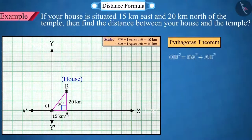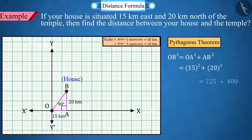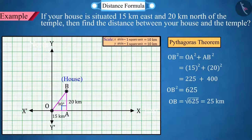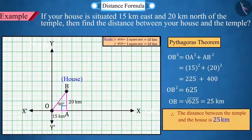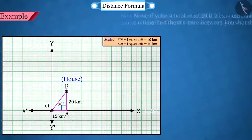By using the Pythagoras theorem in this graph, we obtain the distance between the origin point O to B as 25. So the distance between the temple and the house will be 25 kilometers.